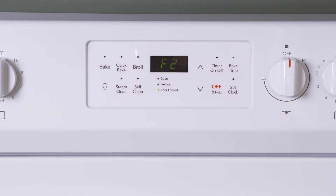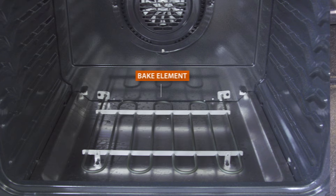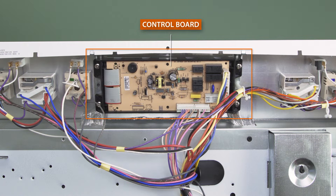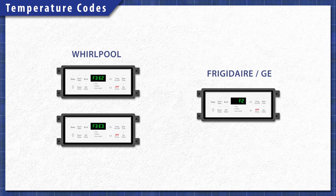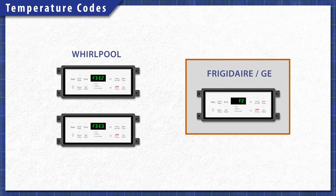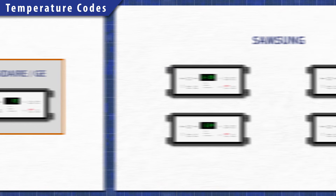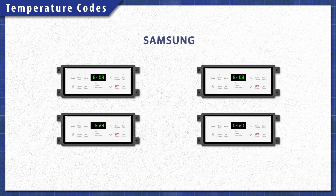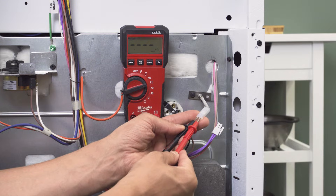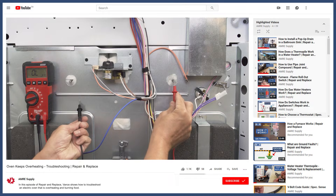A temperature error code indicates that there's a problem with a heating element, the temperature sensor, or the control board itself. In Whirlpool models this will be an F3E2 or an F3E3 code. Frigidaire and GE models will display an F2 code. Samsung will display an E0A, E24, E08, or a C21 code. Each of these components can be tested using a multimeter. You can learn more in the troubleshooting videos linked below.